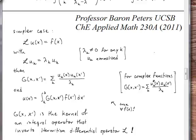We are writing these expressions as though we're working with real-valued functions. In general, we could have complex-valued functions — for example, the spherical harmonics. In those cases, you would have to complex conjugate the k-th eigenfunction as a function of x and multiply it by the k-th eigenfunction as a function of x prime. This is the more general case for complex-valued eigenfunctions.